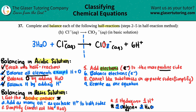Looking at the reactant side from left to right: water has no charge in the upper right-hand corner, so it's zero — three times zero is still zero. The Cl minus has a negative charge, so that's a negative one, and there's only one of them. Zero plus negative one gives an overall charge of negative one on the reactant side.